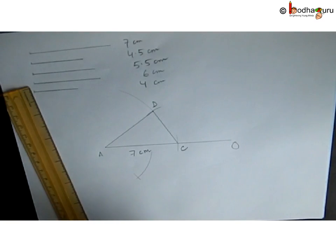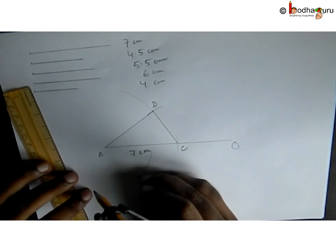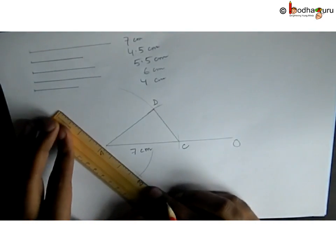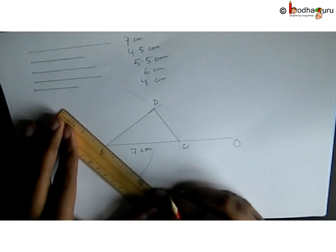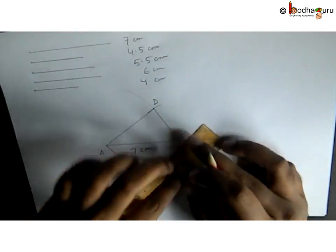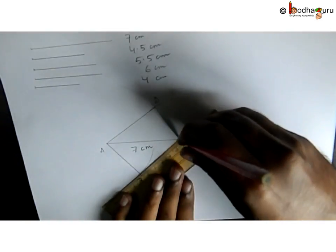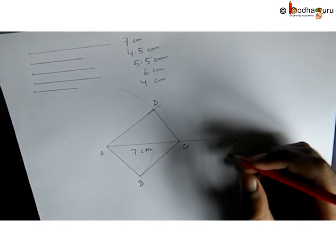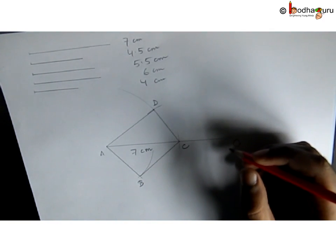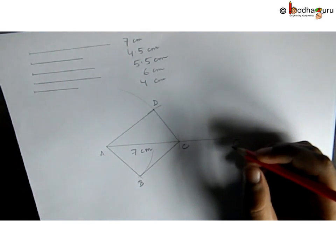So this intersection point becomes point B. Now we join A and B and C and B. That completes our quadrilateral ABCD. That's all for now children, bye bye.